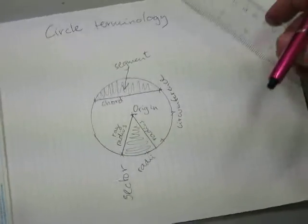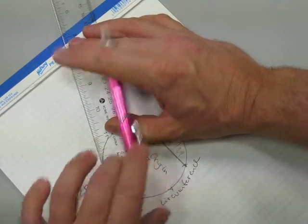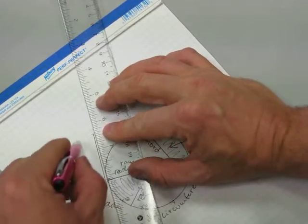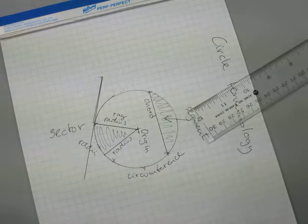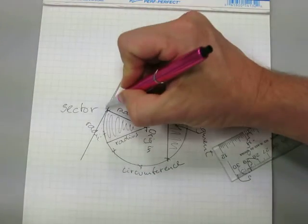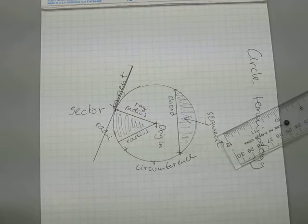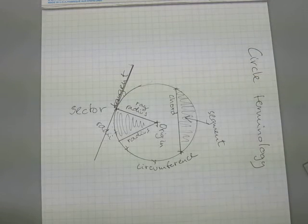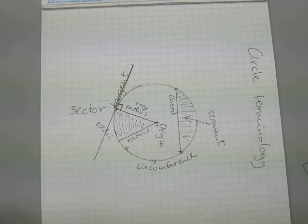I want to draw a special line here that is just barely touching the circumference — actually contacting the circumference at only one point. This line is called a tangent, a tangent line. It means it's just touching the circle — that's what it means in Latin, like a tangible thing has to do with touch. It is important that a tangent line is always square to a radius.